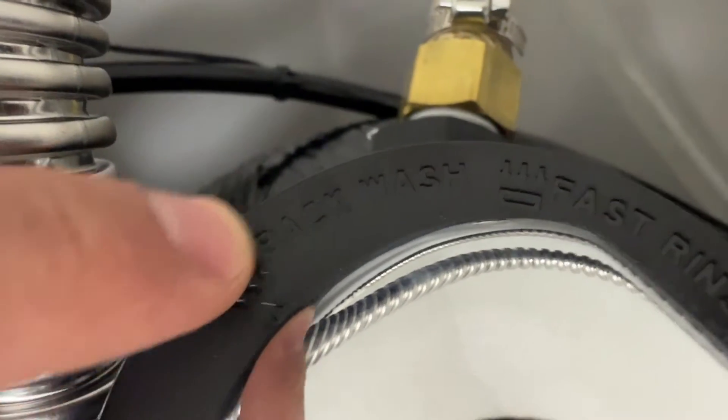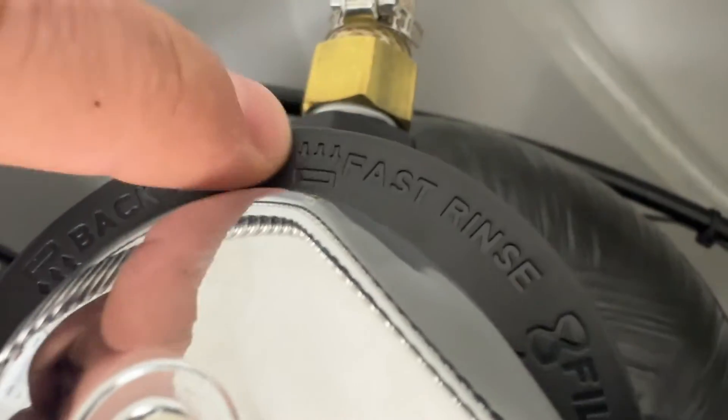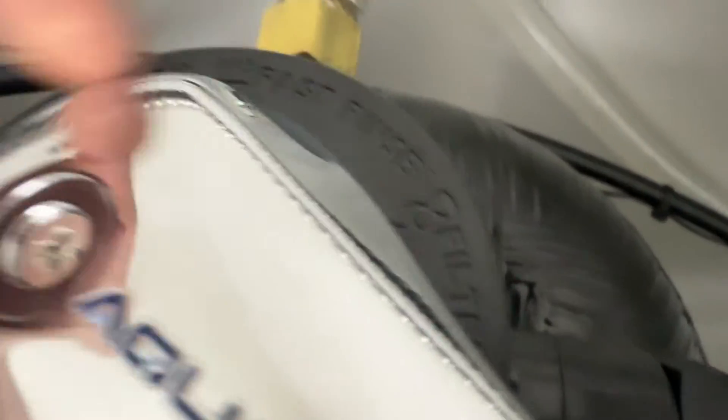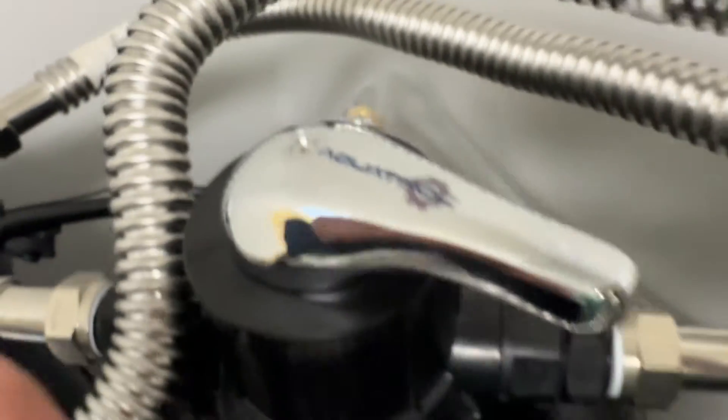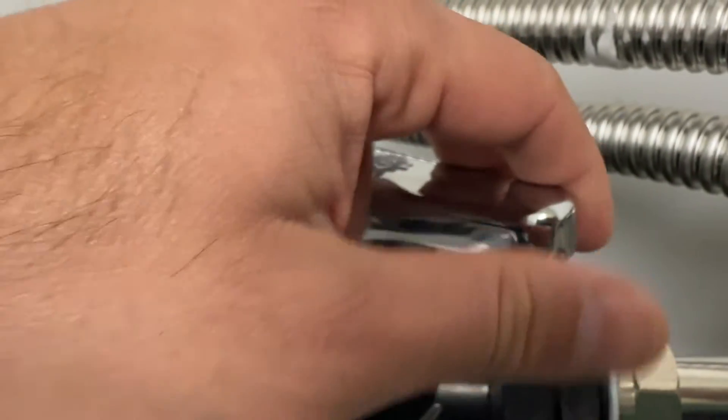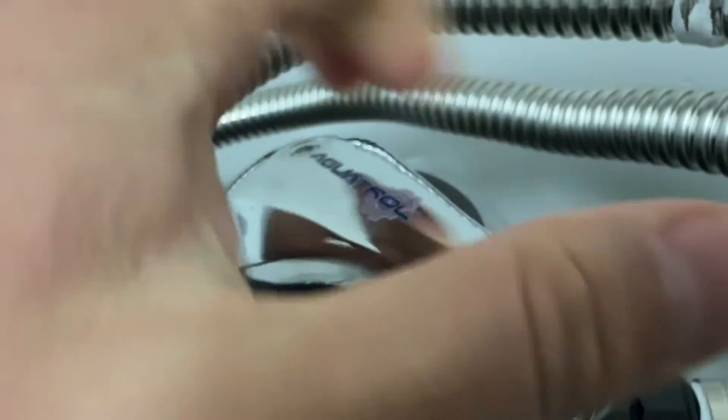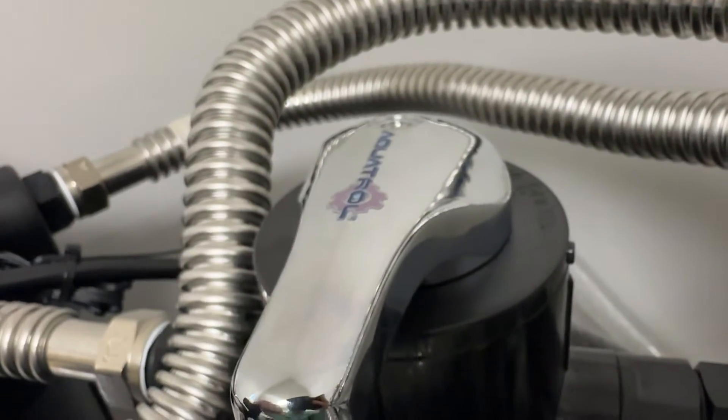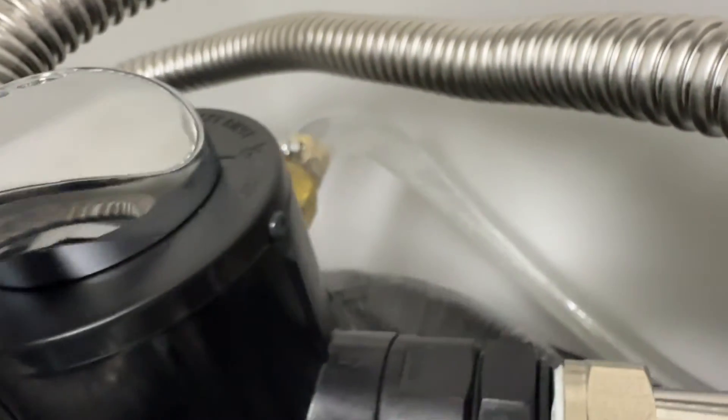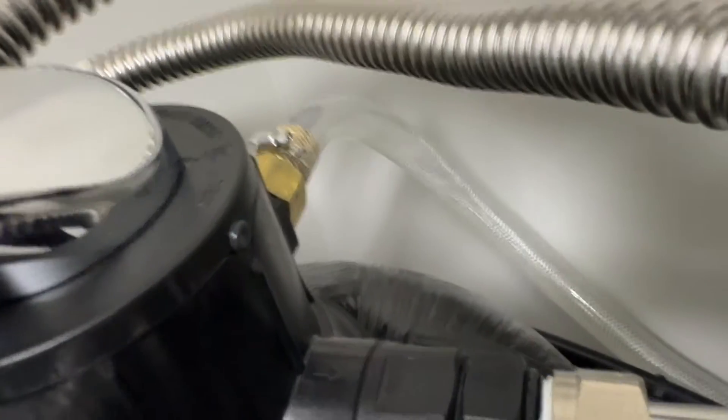Remember you had backwash on the left then fast rinse in the middle and then filter on the right. So I'm going to move it from here over to fast rinse until you hear the click. All right nice firm click. Now we're going to leave it in fast rinse for about five minutes.